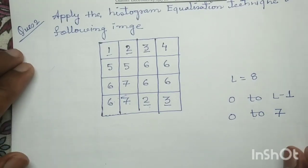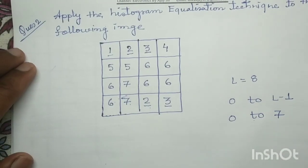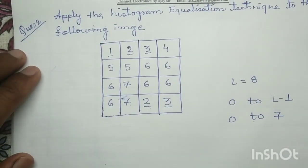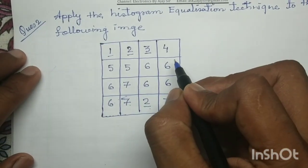Similarly, for input gray label 4, we check its occurrence in the image.